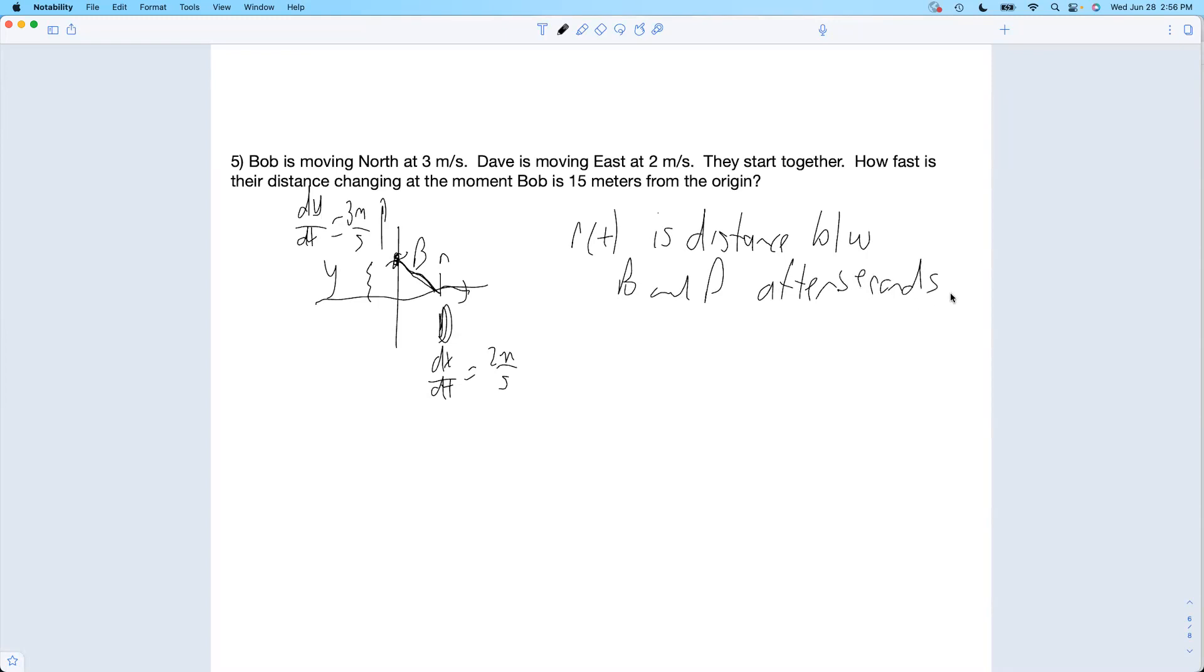Now, the whole point of related rates: if I could find this function, I would just take the derivative, plug in my time, and be done. If I could figure out r(t) easily, then I would just do that. But related rates says look, you don't have to go through all that work. Figure out any kind of relationship that has r in it. Write a formula that's got r in it, take some derivatives, hopefully you know everything that you get in that derivative formula that you can just plug into and be done.